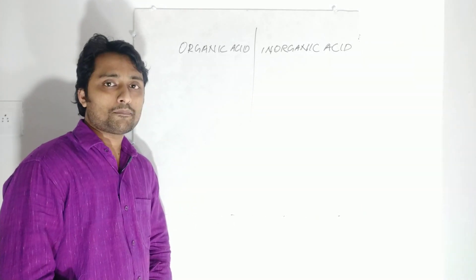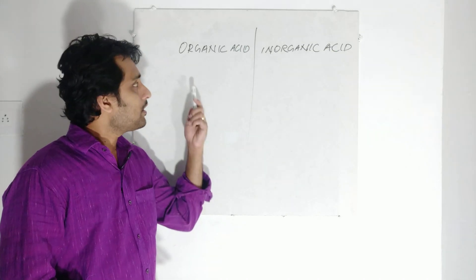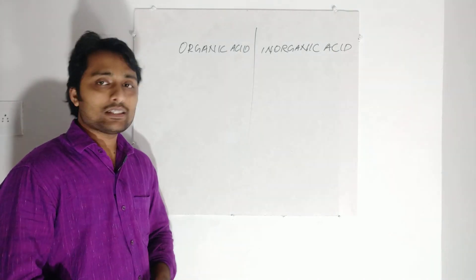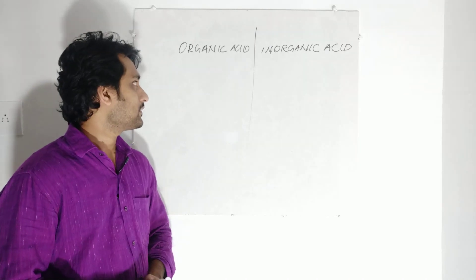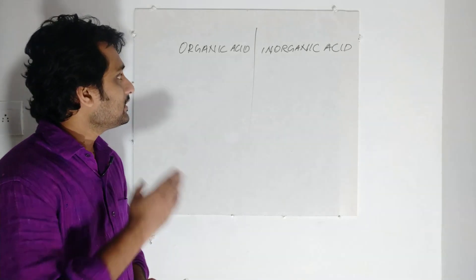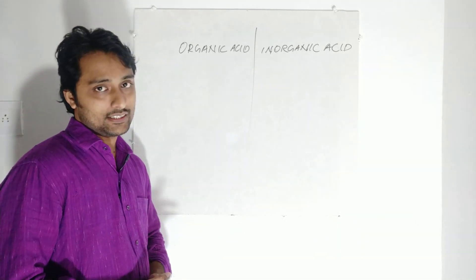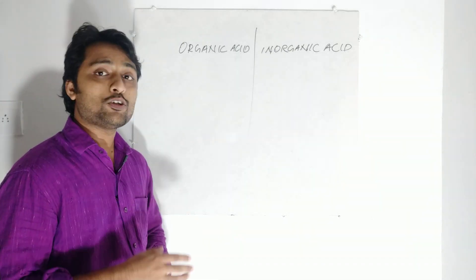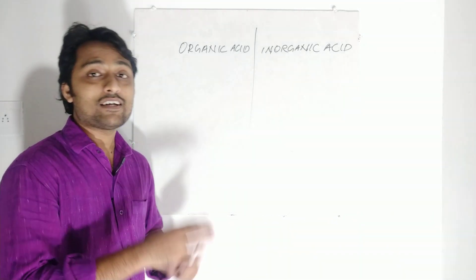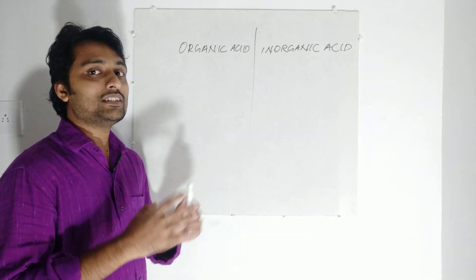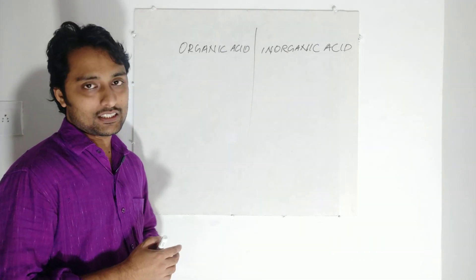Hi students. Today we are going to discuss about organic acid and inorganic acid. So what is this organic acid? Organic acid is the acid which is present in organisms — organisms meaning things which have life. So the acid which is present in organisms is known as organic acid.